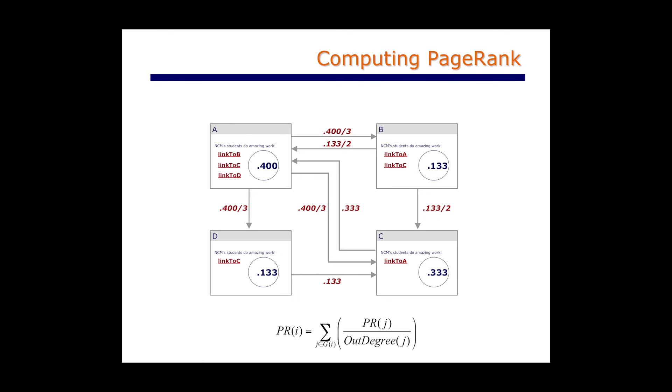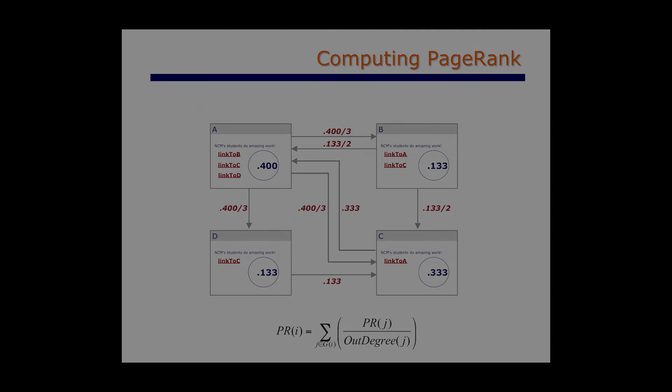These are the values at which we say the page rank algorithm has converged. I find it really fascinating that these values — which reflect the importance of a page as measured by how important the other important pages think a page is — are identical to the fraction of time that our random surfer would spend if surfing the web for an infinite period of time. Both of these ideas lead to exactly the same mathematical result.